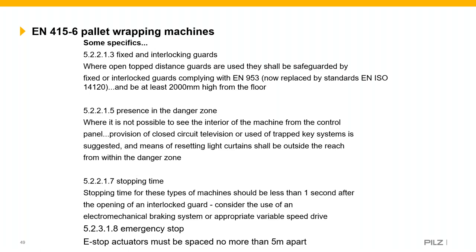Section 5.2.2.1.7 addresses stopping time — the machine must stop in less than one second after the opening of an interlock guard. This is where you would consider an electromechanical braking system or appropriate variable speed drive. If stopping cannot be achieved within one second, the guard needs to be moved further from the hazard, or guard locking used to prevent the door opening until the machine is at a standstill.